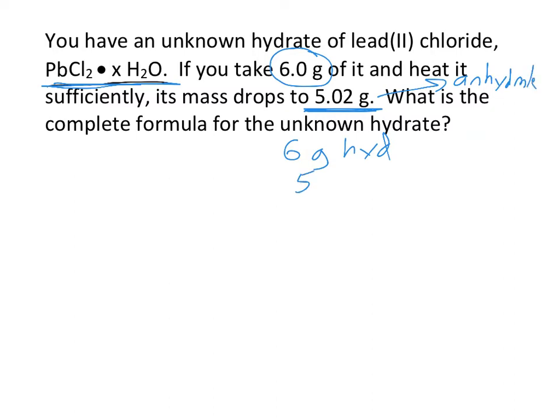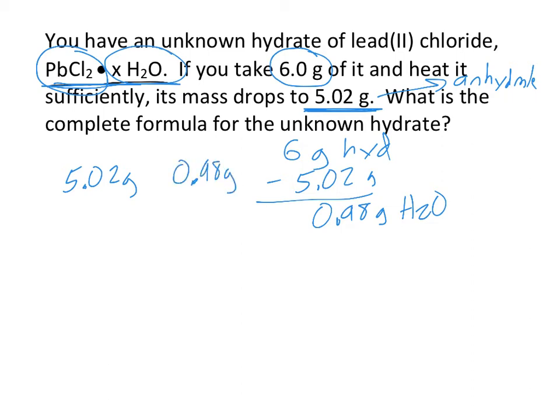So if we subtract those two things, we can figure out how much water there must have been in there. And if I do this, I figure out that there were 0.98 grams of water. So that means that this part of the formula, the PbCl2, that contributed 5.02 grams to the hydrate. And this part, the unknown number of waters, that contributed 0.98 grams to the hydrate's mass.